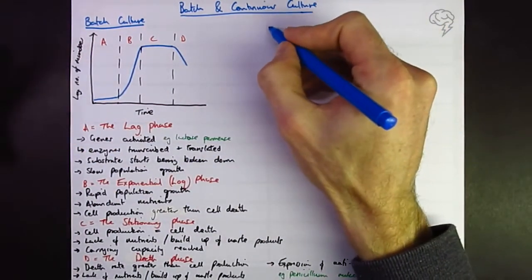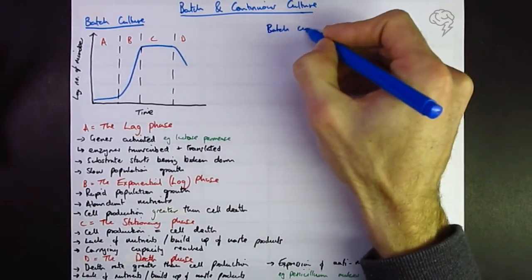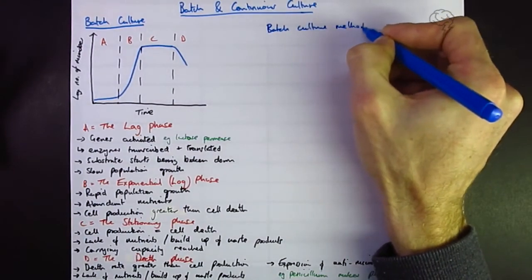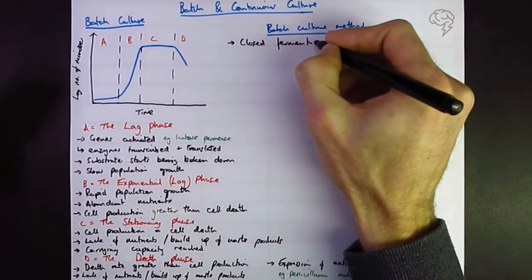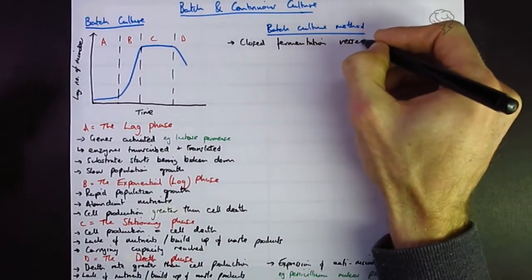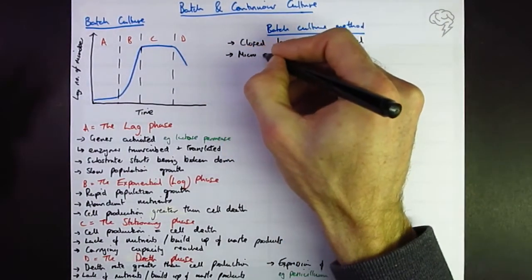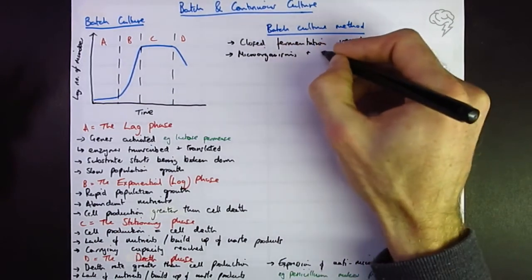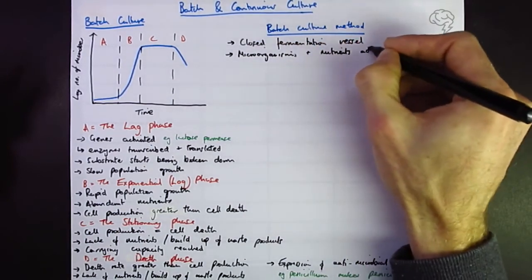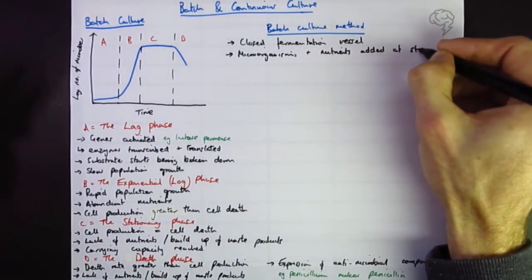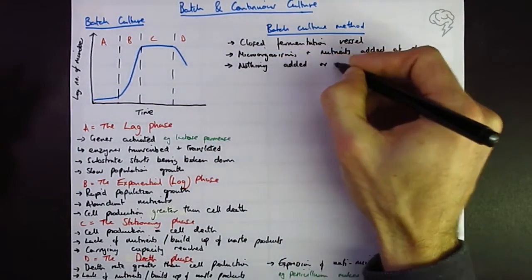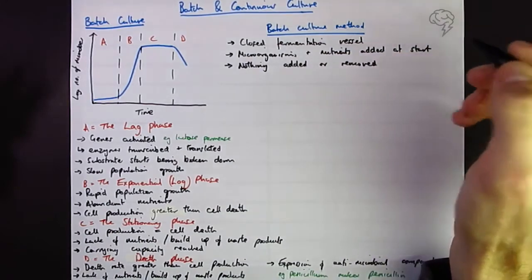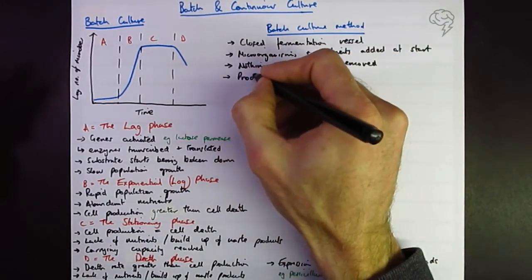Right, so what are the methods for making things in batch culture? We're going to use the closed fermenter or closed fermentation vessel. What do we mean by closed? Well, the microorganisms and the nutrients are added at the start and then you basically shut the lid and nothing is added or removed. And then the products are separated at the end.